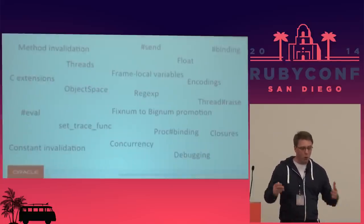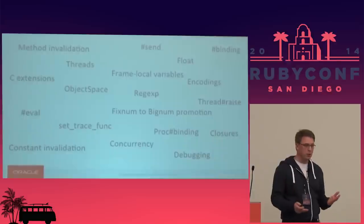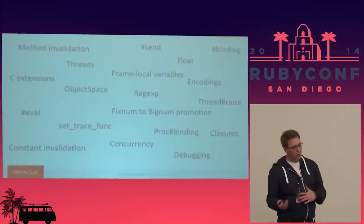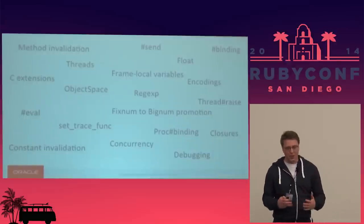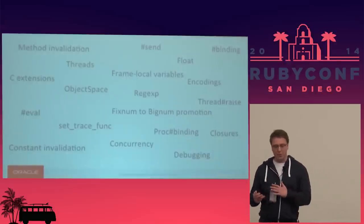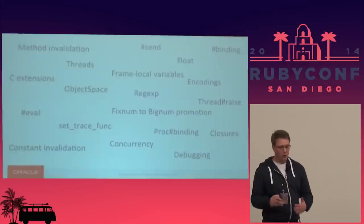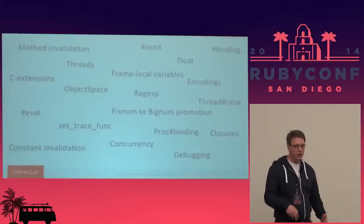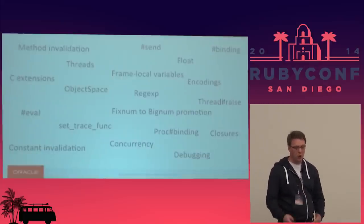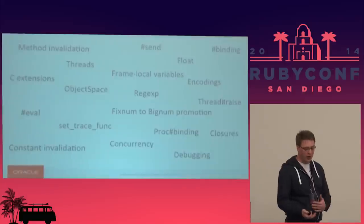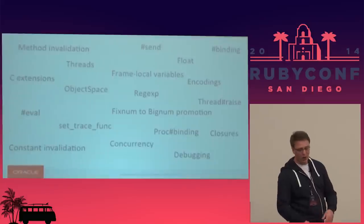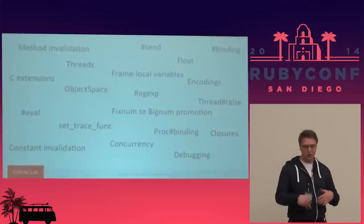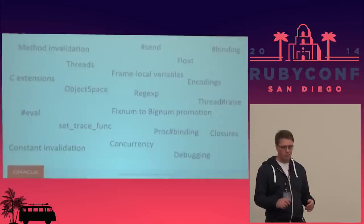We implement all the difficult parts of Ruby: method invalidation, dynamic programming such as send, method missing, binding, threads, initial C extension support, frame local variables, object space, regular expressions, encodings, eval, concurrency, debugging, closures, and promotion. Some of these we implement better than other Ruby implementations — our object space is always on, our set trace func is always on, and we have a debugger that's always on, so you can stop programs, introspect them using a shell, and continue running at the same performance.